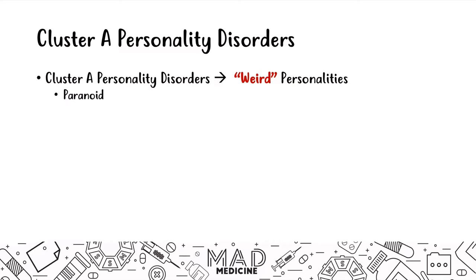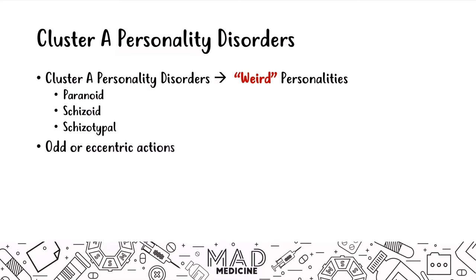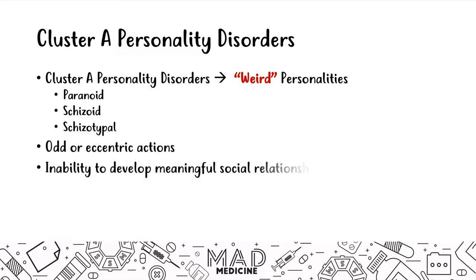Let's start talking about the types of personality disorders in Cluster A. These are going to be paranoid personality disorder, schizoid personality disorder, and schizotypal personality disorder. These are the three main weird personalities you need to know for the USMLE Step 1. These patients will have odd or eccentric actions, an inability to develop meaningful social relationships, and no evidence of psychosis.